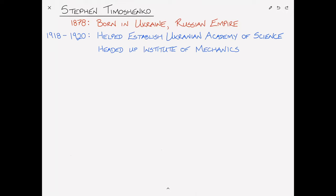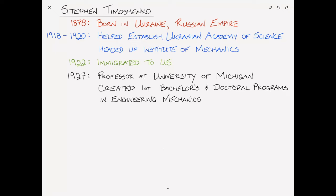Stephen Timoshenko was born in Ukraine in 1878, and back in those days, Ukraine was part of the Russian Empire. Between 1918 and 1920, he helped establish the Ukrainian Academy of Science, and headed up the Institute of Mechanics, which today carries his name. In 1922, right around the time that the Soviet Union was forming, he immigrated to the United States and began working at Westinghouse. Then in 1927, Timoshenko became a faculty professor at the University of Michigan.